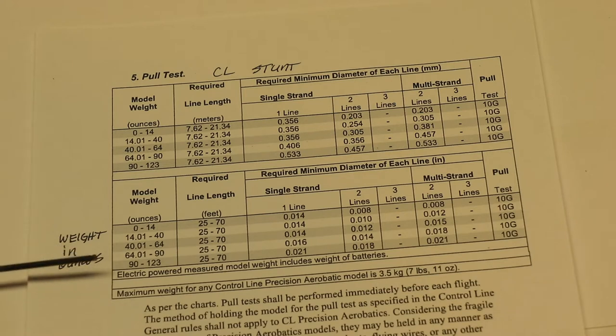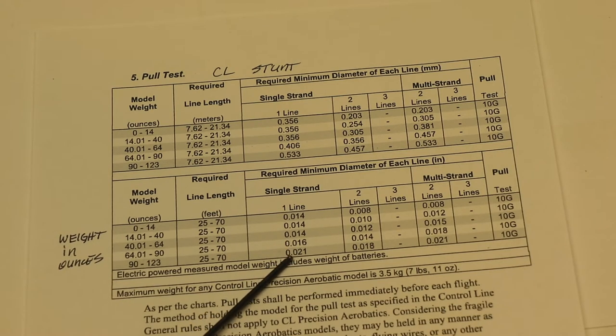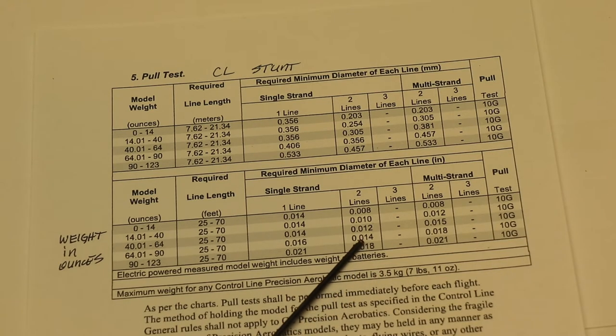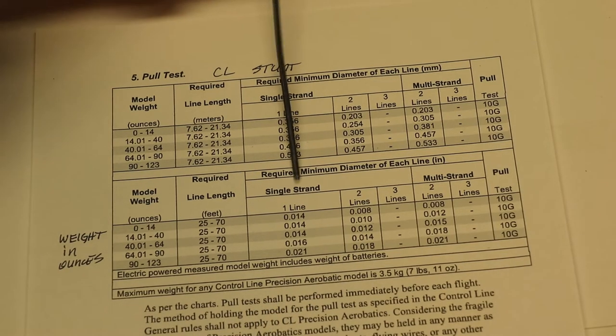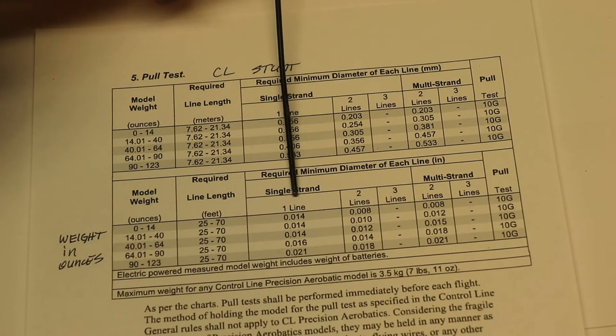And based upon the weight of the model will determine whether you're flying with 0.021, 0.016, 0.014s—that's one line—whether you're flying with 0.018, 0.014s, 0.012s, 0.010s, or 0.008s. And notice here that if you had a monoline airplane that's what this is.